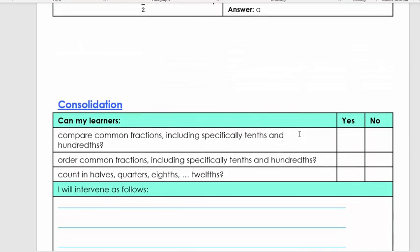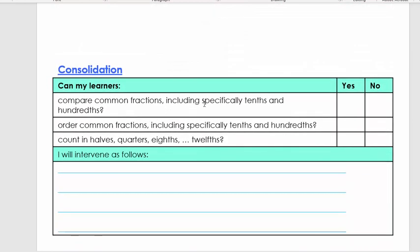Then lastly, for the teacher or the parent, the consolidation. But at this stage, the learners are also big enough to do it themselves where they look at these questions, say yes or no. If they all answer yes, they can carry on with the next lesson. If there's a no, maybe they need to go look again at certain questions or you need to contact us at SA teacher. Thank you very much.